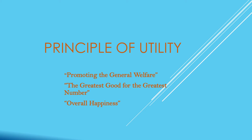The general rule of utilitarianism is known as the principle of utility. The notion of utility really refers to the quantity of happiness produced. Sometimes the principle of utility is interpreted as promoting the general welfare. It is also sometimes referred to as acting to promote the greatest good for the greatest number of people. Another interpretation is that its aim is to promote the most overall happiness.